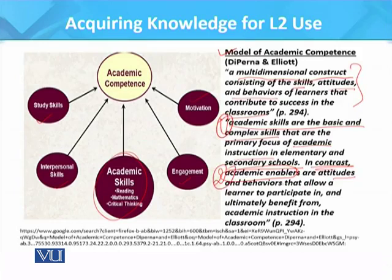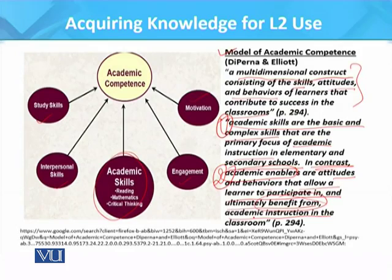Academic enablers are the attitudes and behaviours that allow a learner to participate in and ultimately benefit from academic instructions in the classroom. So academic skills are supported by academic enablers — the attitudes and behaviours that take forward the process and allow a learner to participate in and get benefited from academic instruction. In the model of academic competence, we have academic skills and then the academic enabler.